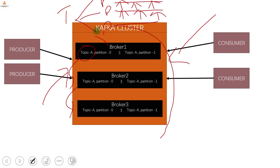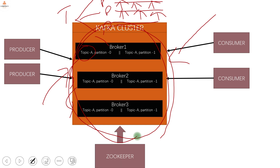A lot of coordination is needed among these brokers, and that is where the role of Zookeeper comes into picture. Zookeeper takes care of the configuration of all these things — a new broker coming into picture, an existing broker going down. When a producer is sending a message, there is no need to mention Zookeeper; they just need to mention the broker and the topic. The rest is taken care of by Kafka itself. The partition can also be specified, but that is for customization and most cases it is not needed.